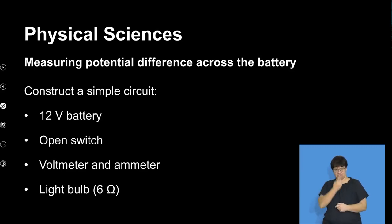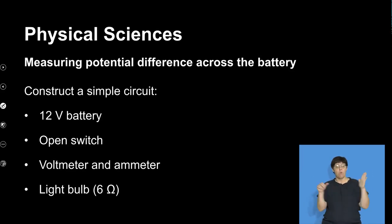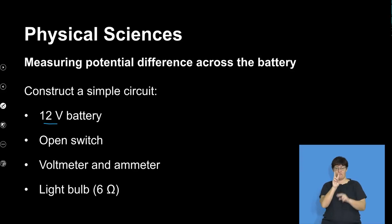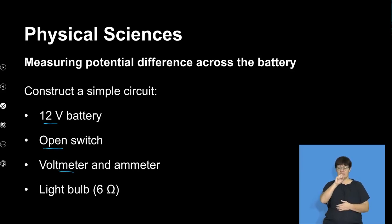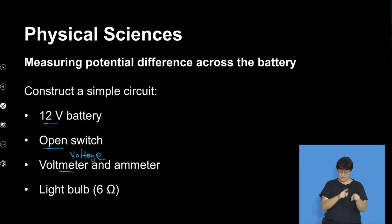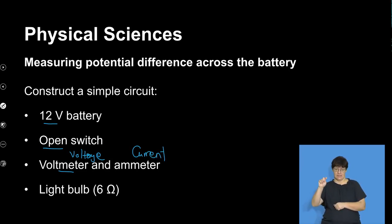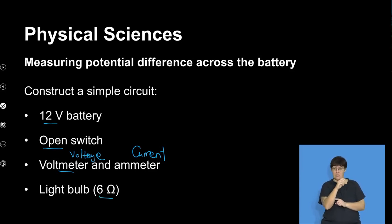Now we're going to construct a simple circuit. What are the most important things? You need a source of energy, which is a 12-volt battery in this case. We'll also have an open switch — pay attention to that open switch. We'll also need an ammeter as well as a voltmeter. The voltmeter measures voltage, while the ammeter is a device that measures current. We'll also need a light bulb with a 6-ohm resistor, since a light bulb is a resistor in many ways.